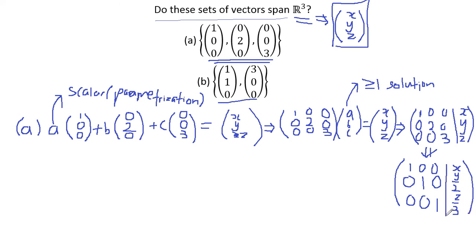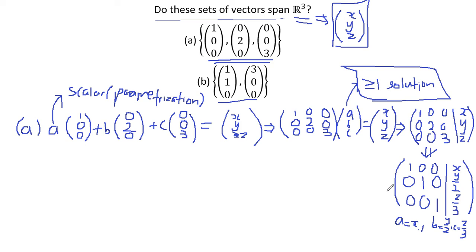The system is now in reduced row echelon form: every leading entry is 1, and in each pivot column the 1 is the only non-zero entry. Since there is at least one solution — A = X, B = Y/2, C = Z/3 — we can say that this set of vectors spans R3, which is the set of vectors in three-dimensional space.